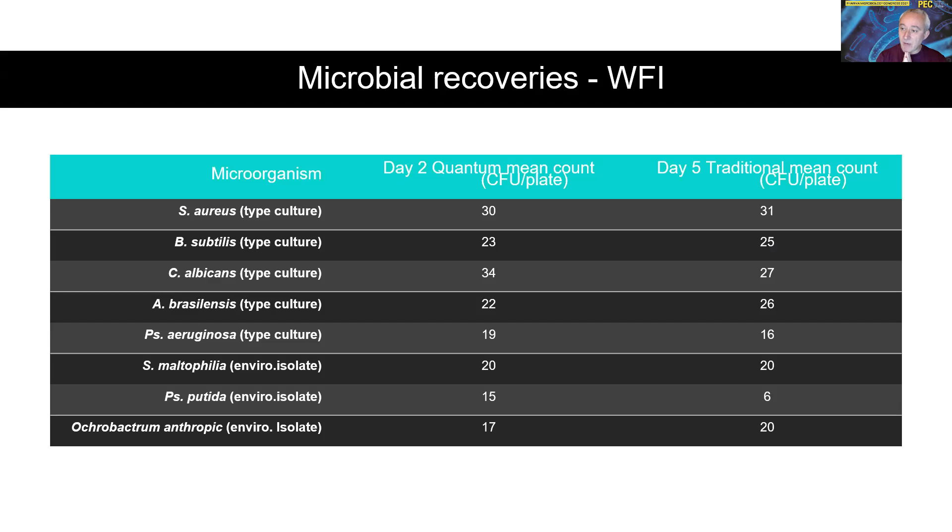The counts were evaluated at different time points: day two using the quantum device and day five using the traditional method. The counts were comparable at these time points. We can get good recoveries of 70% or more from what we might expect from these type cultures within two days for the quantum compared to five days using conventional membrane filtration. This also needs to take into account any variance because we want to do lots of replicates to prove this. This was also shown with a variance well within 10%. We're getting good consistency.